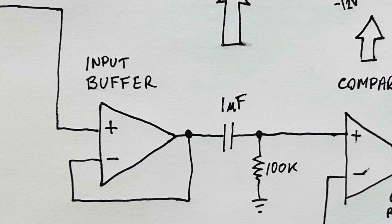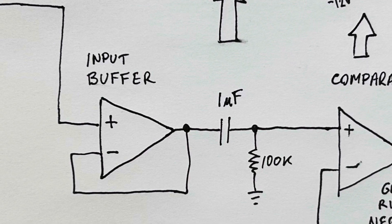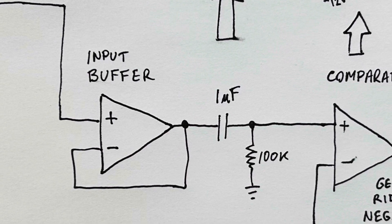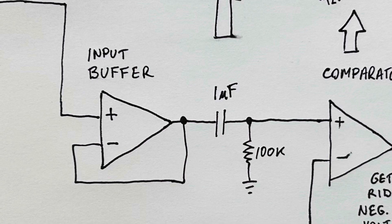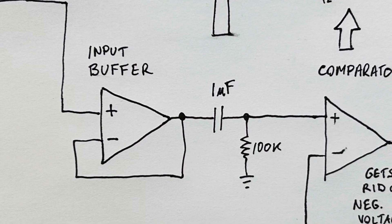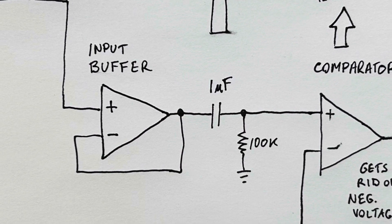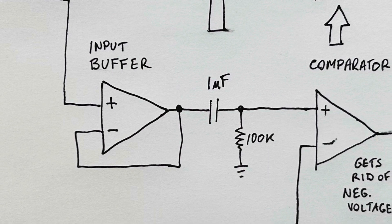The signal then goes through an op amp based buffer and then the signal gets put through a 1 microfarad capacitor and a 100k resistor to ground in order to center the signal around the 0 volts line.